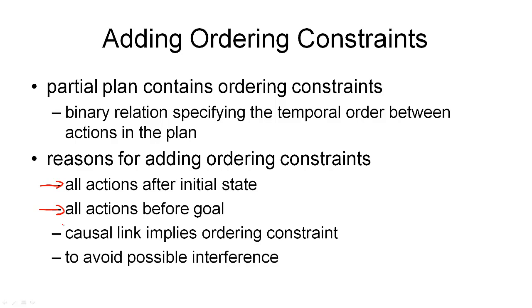Then, we've already seen that a causal link implies an ordering constraint. The final reason is a little more complex, and it is to avoid possible interference between the actions in our plan. Remember that I told you that an action can interfere with a causal link if it has a negative effect that interferes with a positive condition on a causal link. Adding ordering constraints is one way to get rid of this possible interference.